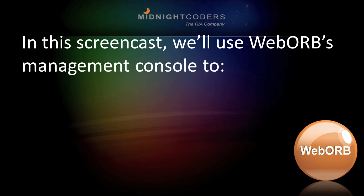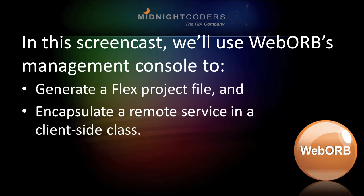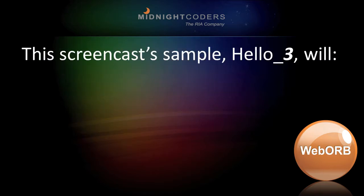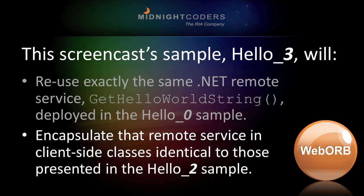In this screencast, we'll use WebOrb's management console to generate a flex project file and encapsulate a remote service in a client-side class. This screencast's sample, Hello3, will reuse exactly the same .NET remote service, GetHelloWorld string, deployed in the Hello0 sample, and encapsulate that remote service in client-side classes identical to those presented in the Hello2 sample.